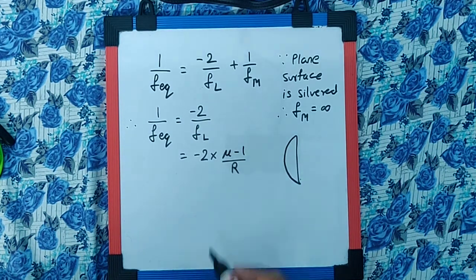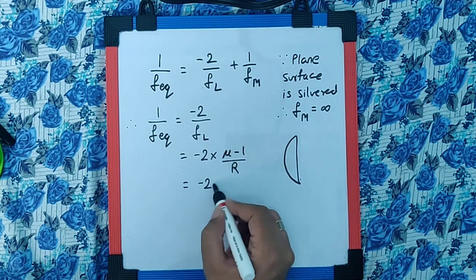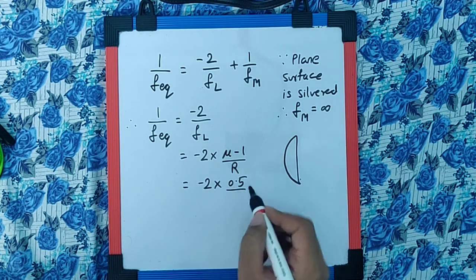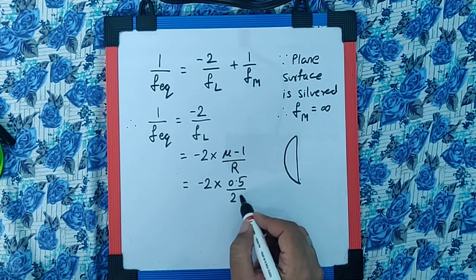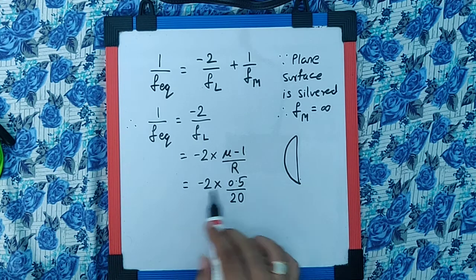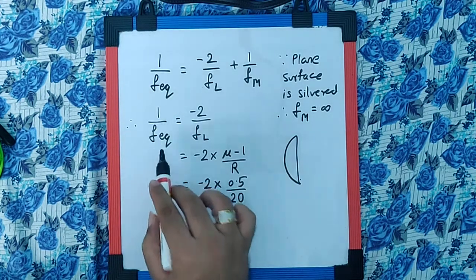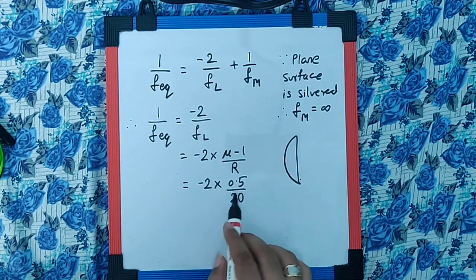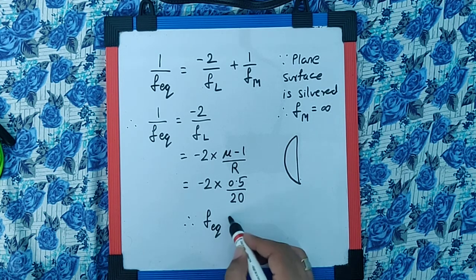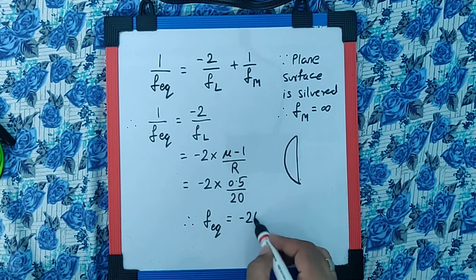If we substitute the values, we get minus 2 into 1.5 minus 1 as 0.5 upon the radius of curvature as 20. So 2 into 0.5 is going to be 1. This is going to be 1 by f equivalent as minus 1 by 20. That makes the equivalent focal length as minus 20 centimeters.